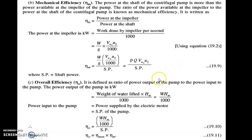The product of manometric efficiency and mechanical efficiency is the overall efficiency. Overall efficiency is output upon input — output is your manometric head and input is your shaft power. So it is Rho G Q HM, that is the output power, upon shaft power, that is the input power, and that ratio is called overall efficiency. It is very easy to remember these three types of efficiencies: manometric, mechanical, and overall efficiency.